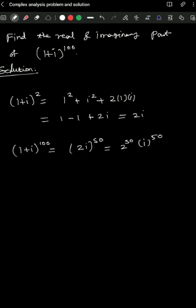And we know what is i^50. You know i^4 is 1, so this implies i^48 equals 1. So i^50 is i^2. So this is 2^50 times i^2.